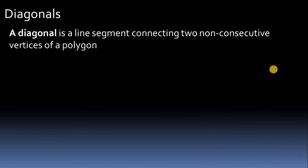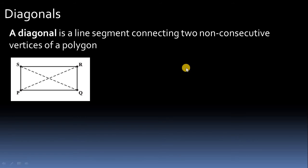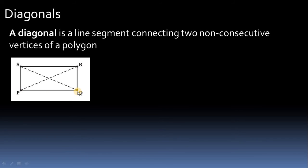Diagonal is a line segment connecting two non-consecutive vertices of a polygon. For example, in a quadrilateral like a rectangle, PQ is not a diagonal — it is a side. But a segment connecting non-consecutive vertices is exactly the diagonal. So a polygon can have two such diagonals.